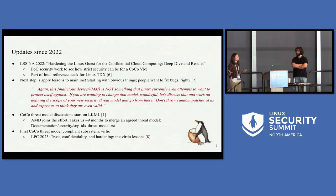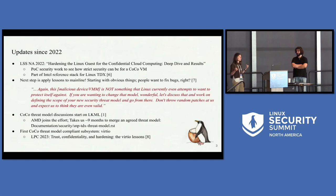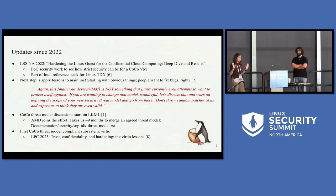So we started what we called the confidential cloud computing threat model discussion in the LKML. Carlos put a lot of effort trying to push this forward, and jointly — after approximately nine months of discussions with people arguing about all kinds of different terminology — we got this merged. It now lives in the kernel documentation. We got agreement about what this threat model is, and we will shortly talk about it.